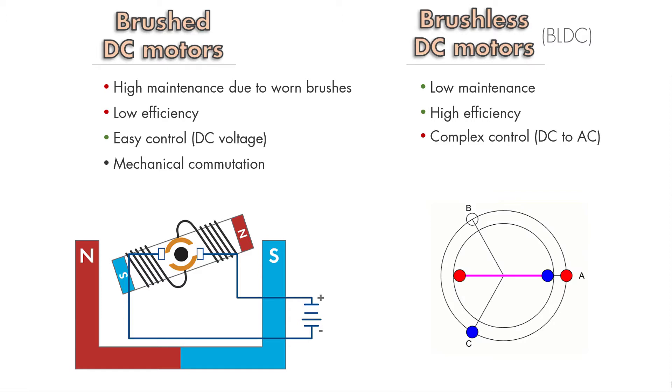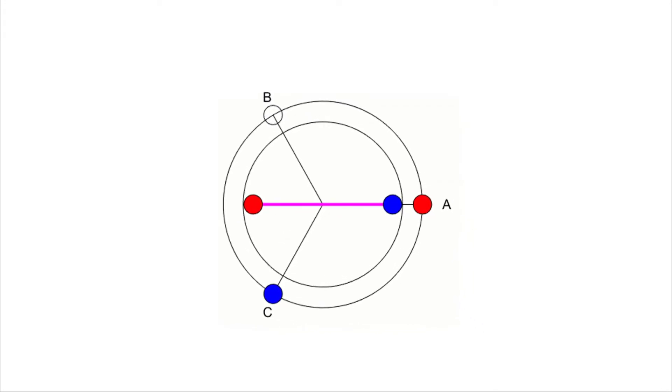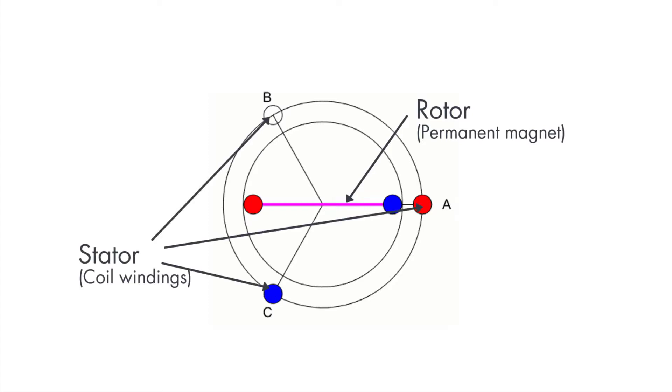BLDCs overcome the shortcomings of brushed motors by replacing mechanical commutation with electronically-driven commutation. To better understand this, let's look at the BLDC motor structure. You can think of a BLDC almost as a flipped version of a brushed motor because the permanent magnets now become the rotor, whereas the coil windings become the stator.